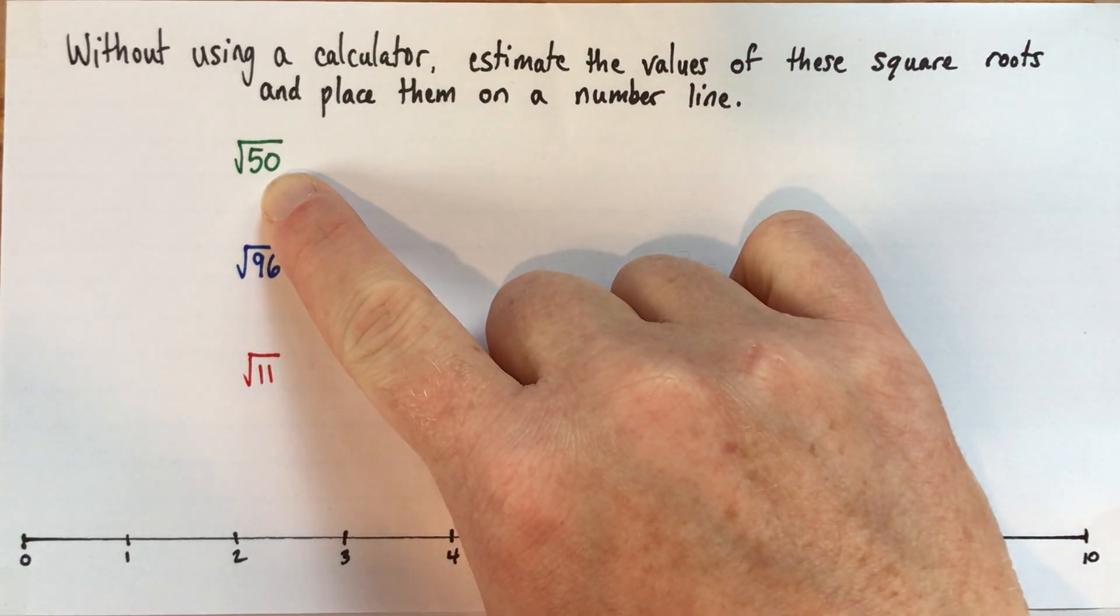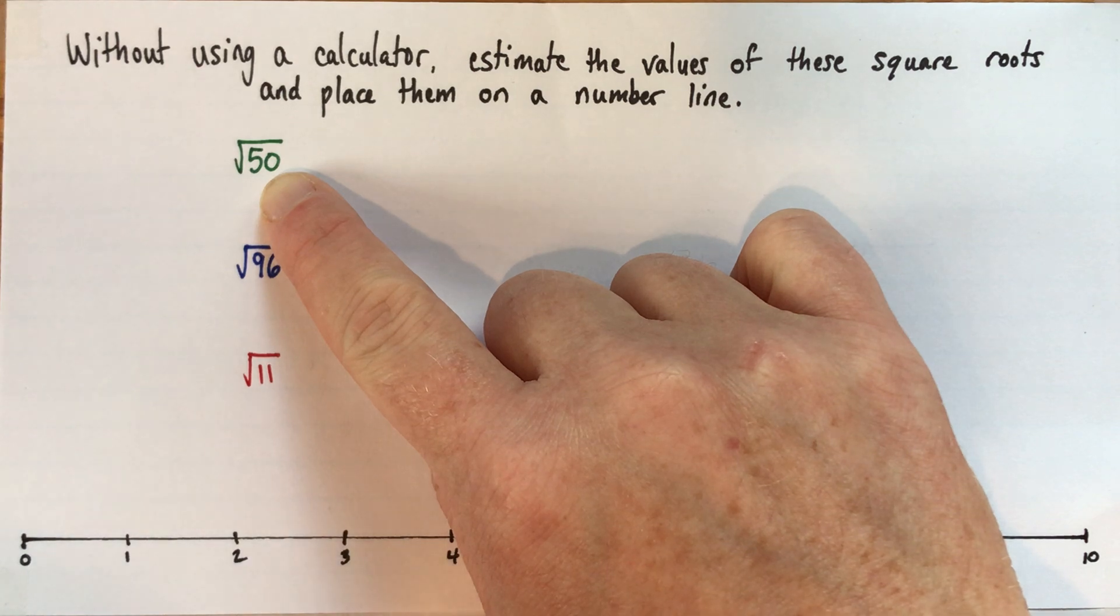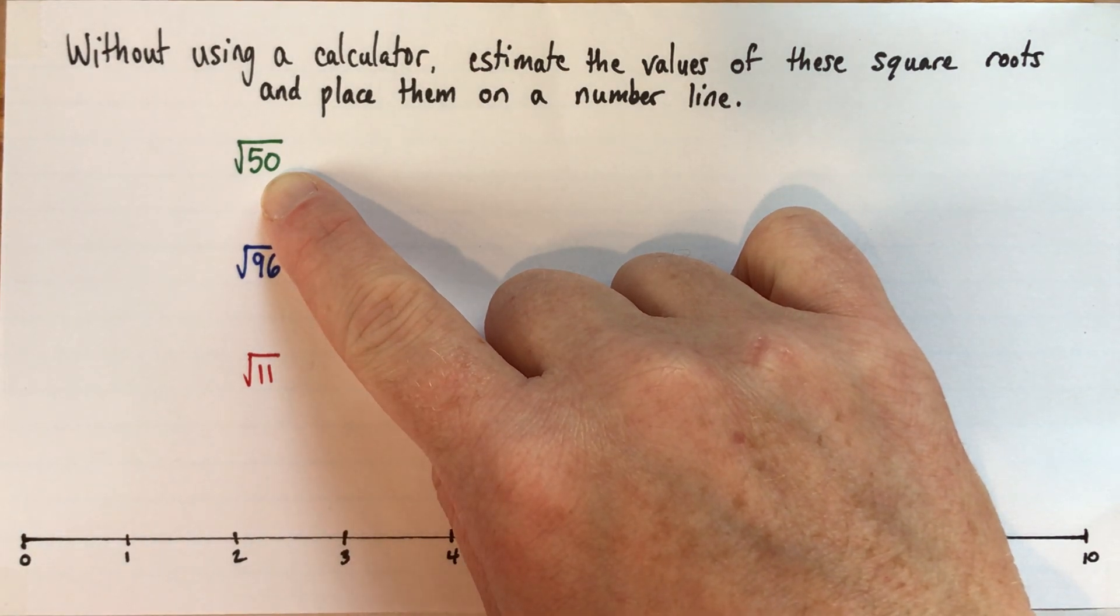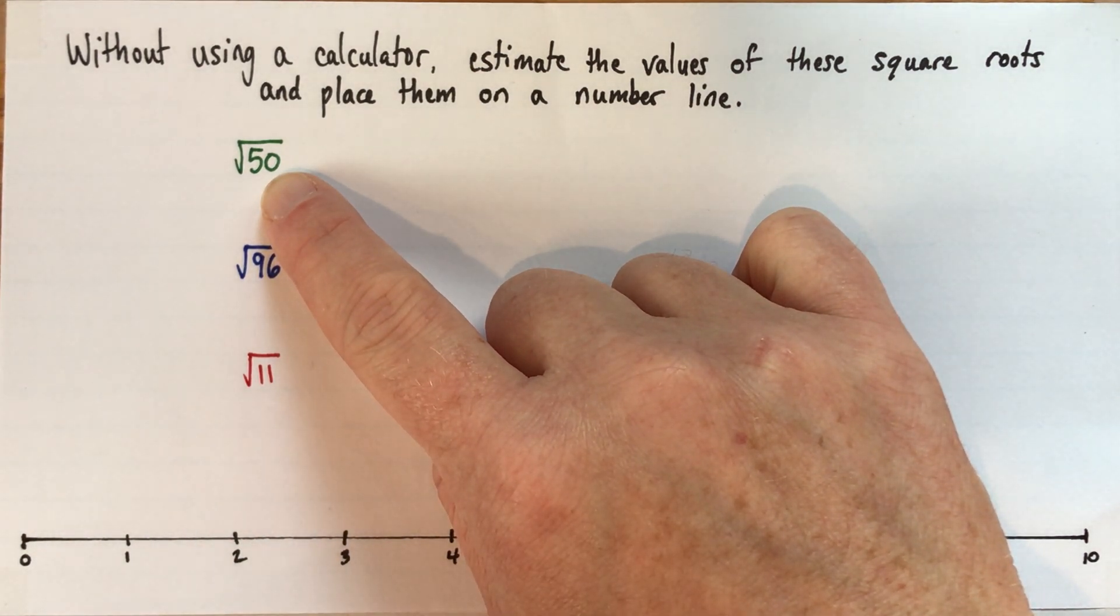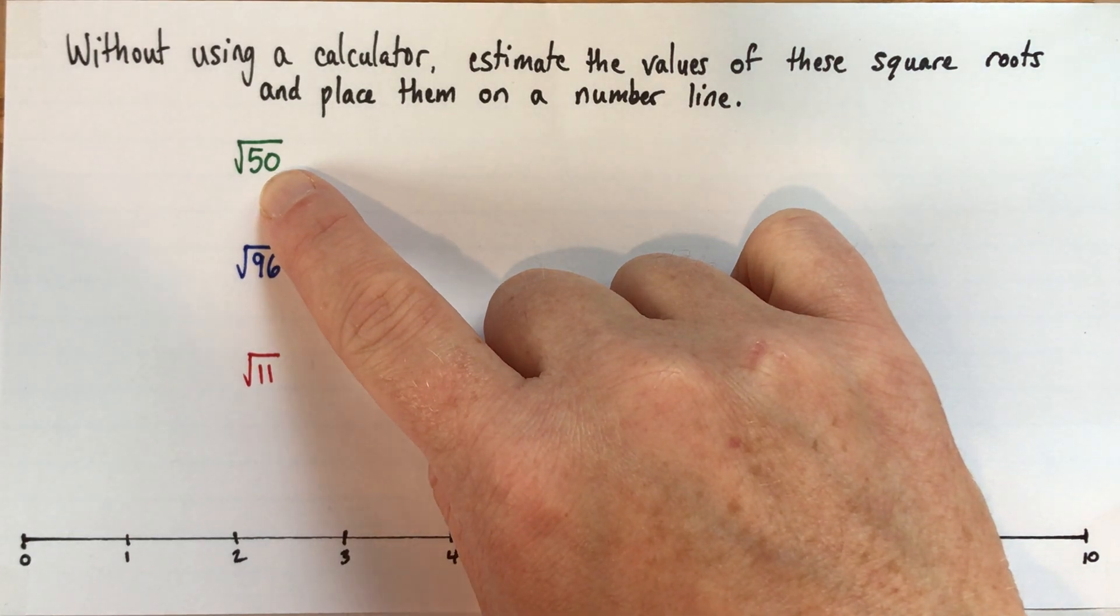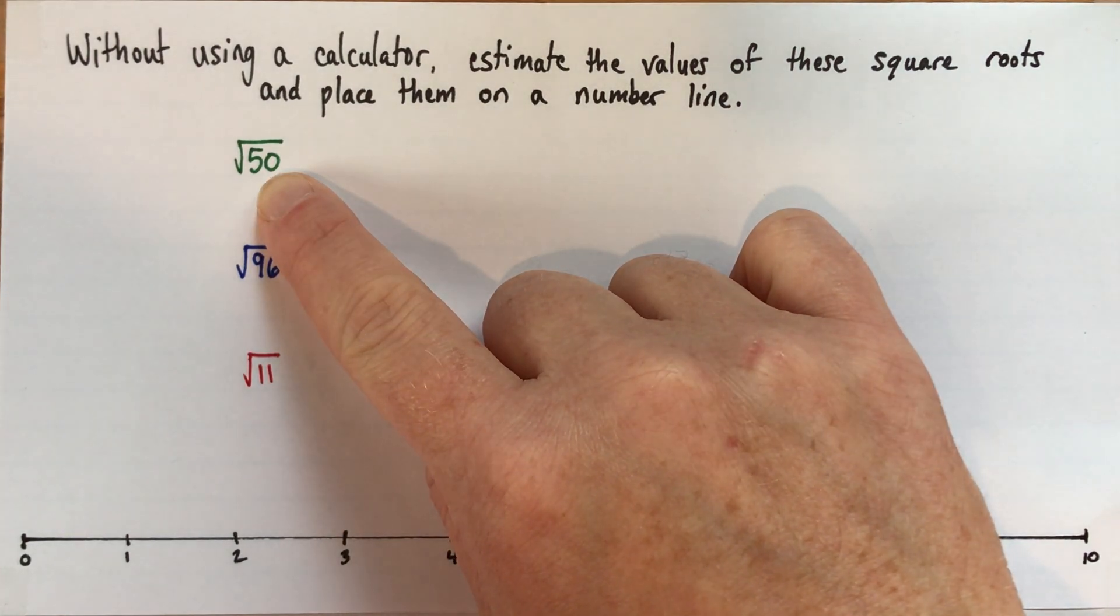Here, some people would look at this and say, oh, 25. If you think that, then you accidentally fell in the little trap - you took half of it instead of the square root. But you need to find a number that would multiply by itself to give 50.